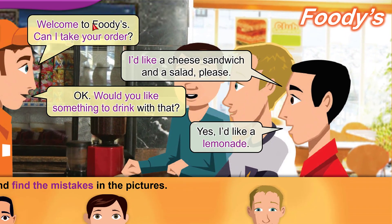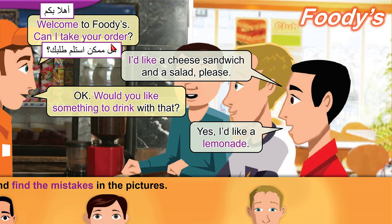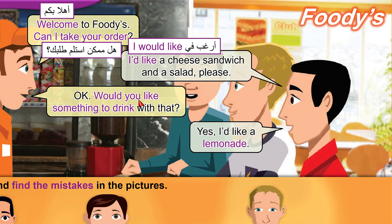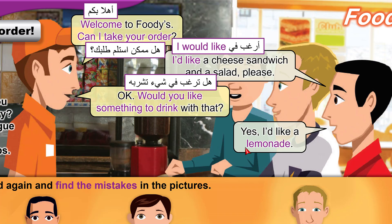"Welcome to Foodies" — Foodies is the name of the restaurant. "Welcome" is how you greet someone in a friendly way. "Take your order" means write down what you want to eat so I can get it for you. "I'd like" is short for "I would like" and is a polite way of saying "I want." It's nicer to say "I'd like a cheese sandwich." "Would you like" is a polite way of saying "do you want something to drink with that?"